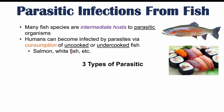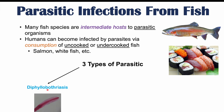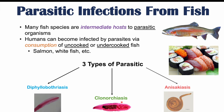The three types of parasitic infections that we can get include diphyllobothriasis, clonorchiasis, and anisakiasis. We're going to talk about each of these infections and what causes them in the upcoming slides.